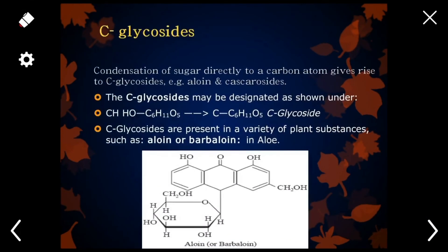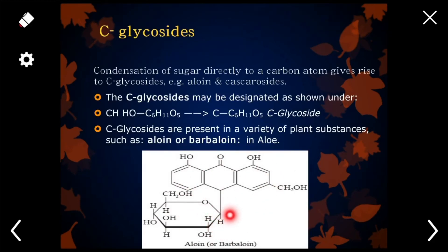C-glycosides are glycosides in which the sugar portion and non-sugar moiety are connected through a carbon atom. This is alloyne, and alloyne is a C-glycoside in which you can see that the connecting atom is carbon. Alloyne or barbaloin is the example of C-glycosides, which are present in aloe.